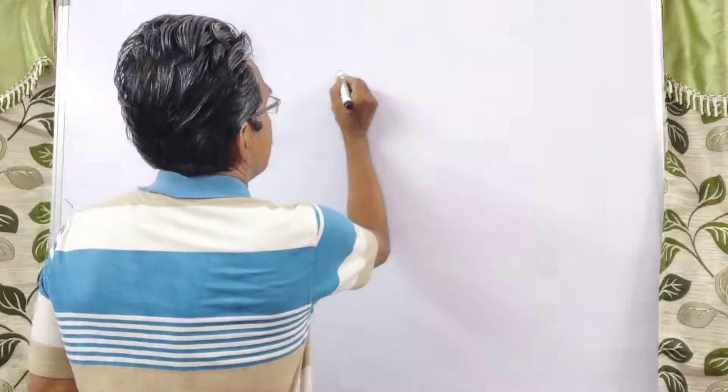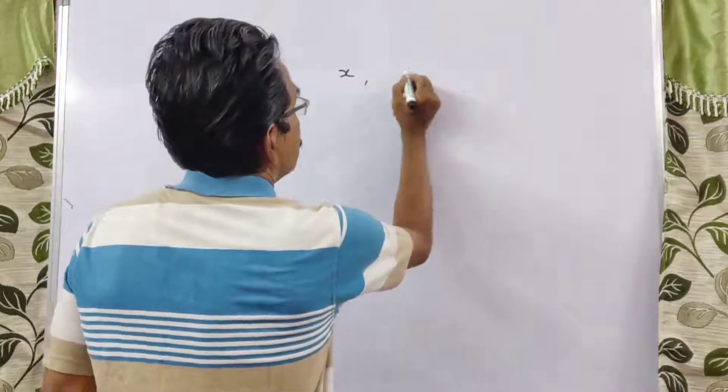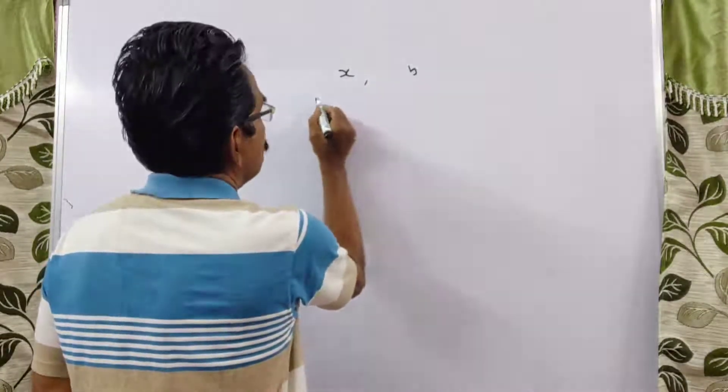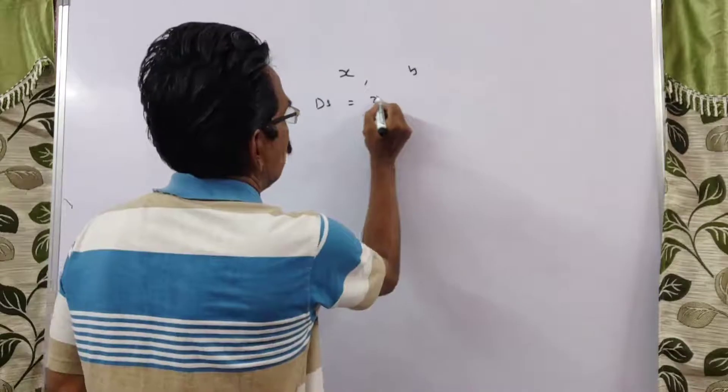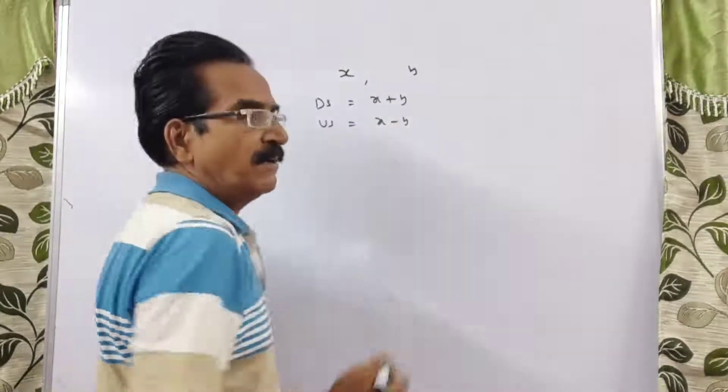Let's say the boy's velocity in still water is x and stream velocity is y. Then downstream velocity equals x plus y, and upstream velocity is x minus y.